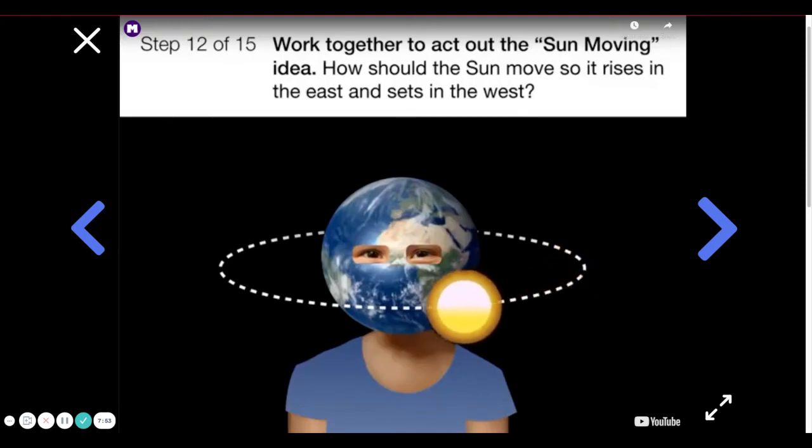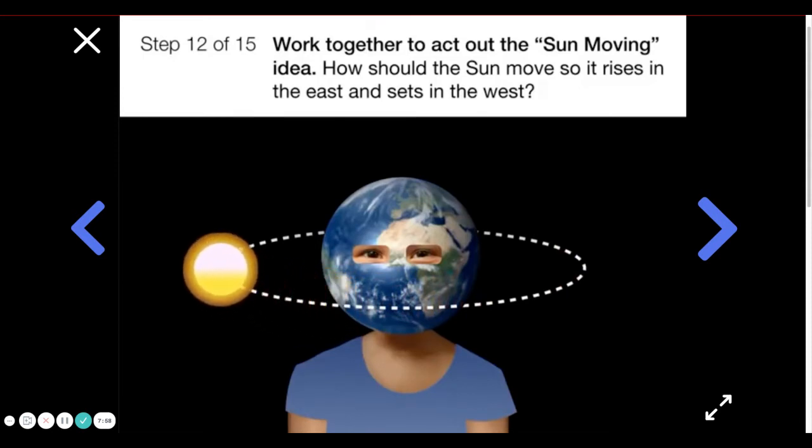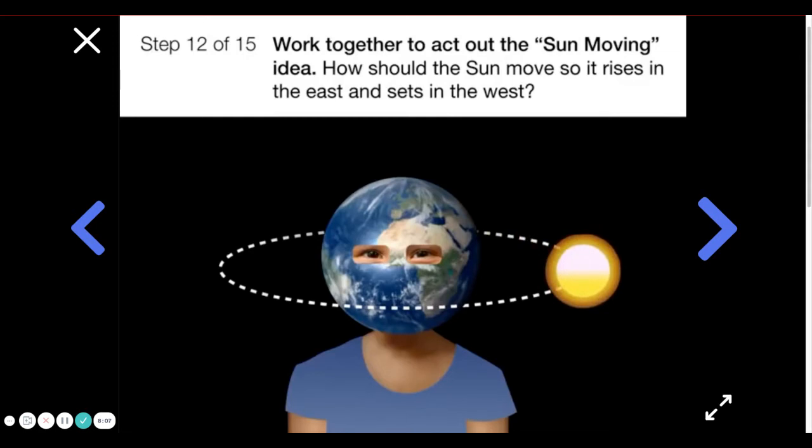Work together to act out the sun moving idea. How should the sun move so it rises in the east and sets in the west? Use the paper sun and sky viewer as you do this. Once you get the hang of it, keep going until earth has seen at least three sunrises and sunsets.